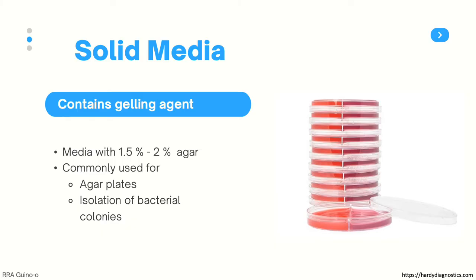Next we have the solid media, whose consistency can be likened to a hard gel. This is because this media contains a large amount of gelling agent, with most media containing 1.5% to 2% agar. The most common use for this kind of media is for making agar plates, such as the ones you see on the right, and for the isolation of bacterial colonies. Since the media is solid, bacteria cannot spread outward. Instead, when they divide, they grow on top of one another, forming a visible mass called a colony.